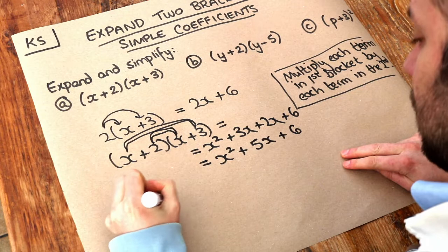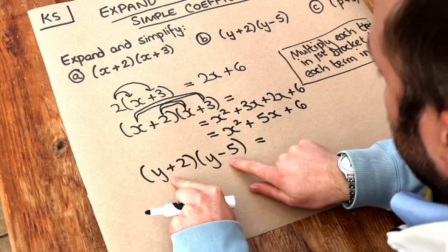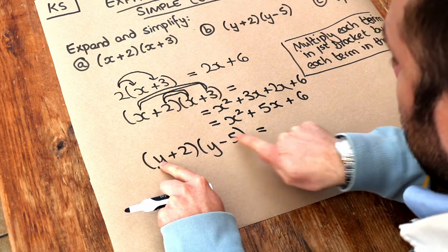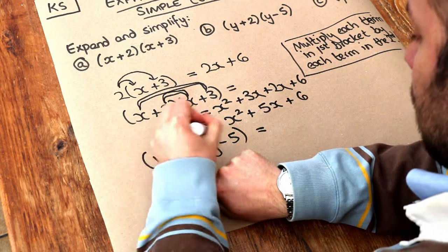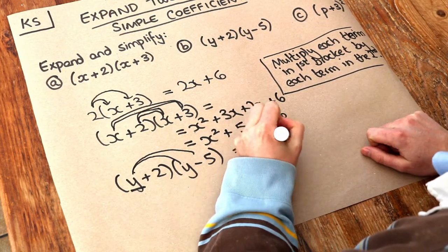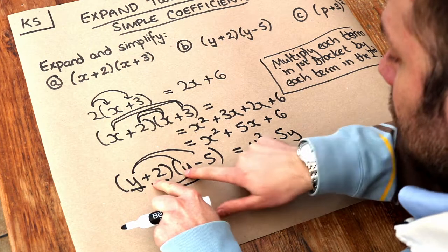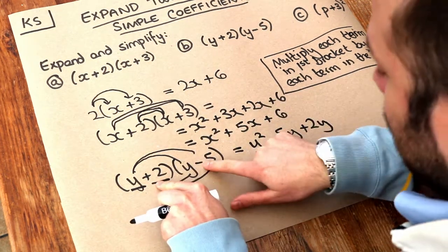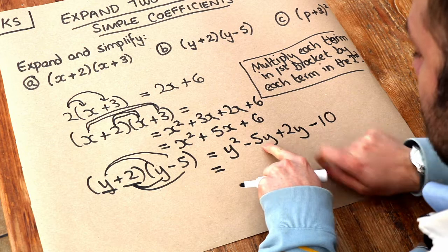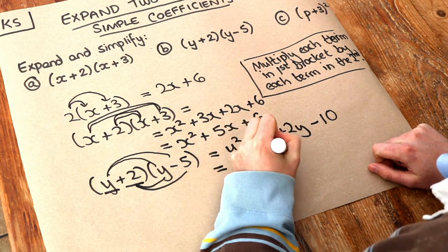What about the second one? We've got y plus 2 multiplied by y minus 5. Again, we do each thing in the first bracket multiplied by each thing in the second bracket. We do y times y, which is y squared, and y times minus 5, which is minus 5y. Then we do the 2 times the y, which is 2y, and 2 times minus 5 — positive times negative is negative, so that's minus 10. Collecting the y terms: minus 5 plus 2 is minus 3, so we get minus 3y. The answer is y squared minus 3y minus 10.